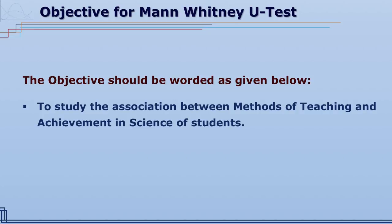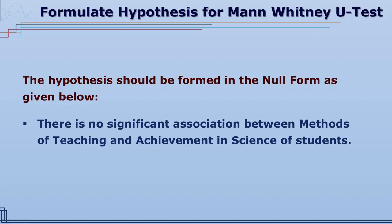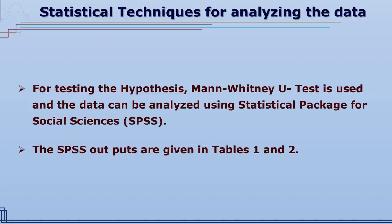The objective can be worded as: to study the association between methods of teaching and achievement in science of students. For this objective, the hypothesis can be formulated accordingly. In order to test the stated hypothesis, the data can be analyzed with the help of the Mann-Whitney U test, and for this one can use the Statistical Package for Social Sciences (SPSS).